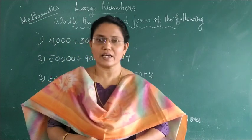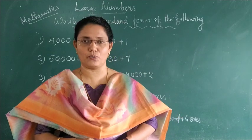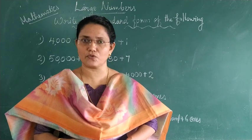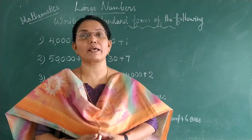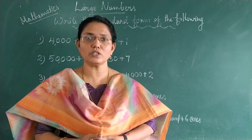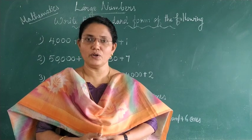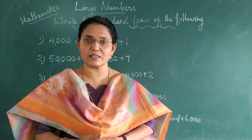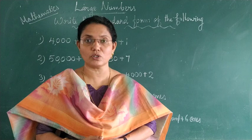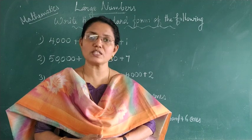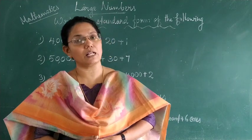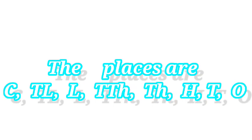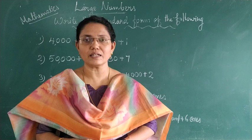When you change the expanded form to standard form, first you have to read the question carefully and try to understand which places are given and which places are not given. According to that you have to write it in standard form. When you read the question you must identify the places which are given and which are not given. The places which are not given, you have to write 0 in that place, and number the places from left to right.